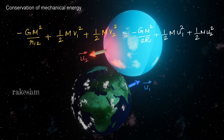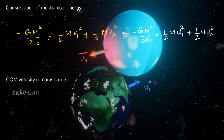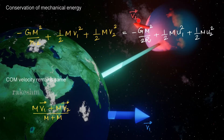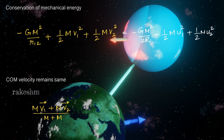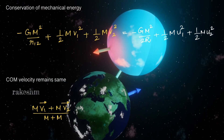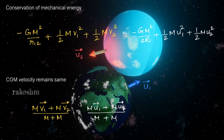So finally, they collide. Their velocities are u1 bar and u2 bar. The final mechanical energy is potential energy plus the total kinetic energy. Next, we can say the center of mass velocity remains the same as there are no external forces acting on this system of two planets. So if the velocities are v1 bar and v2 bar, the center of mass velocity is mv1 bar plus mv2 bar by m plus m. So these both must be equal, or v1 bar plus v2 bar equals u1 bar plus u2 bar.